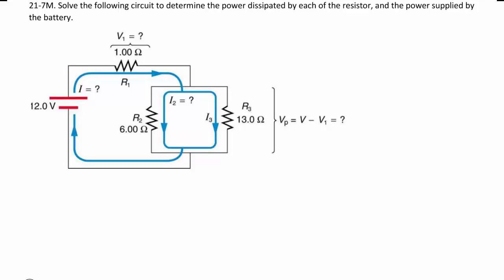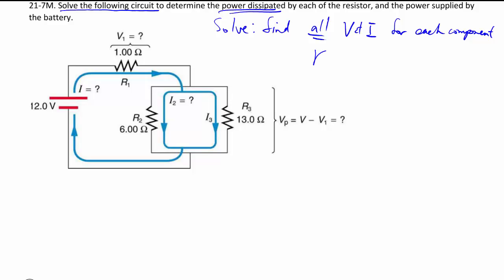First off, let's understand the question first. The wording, solve the following circuit. So to solve a circuit implies that we want to find all of the voltage and current for each resistor, and sometimes the battery as well. And then from that we can easily find the power because we have I and V.